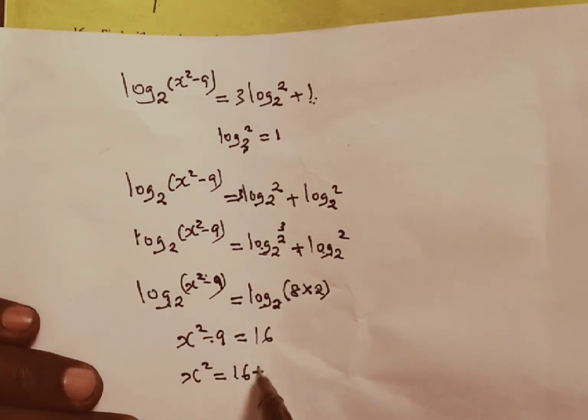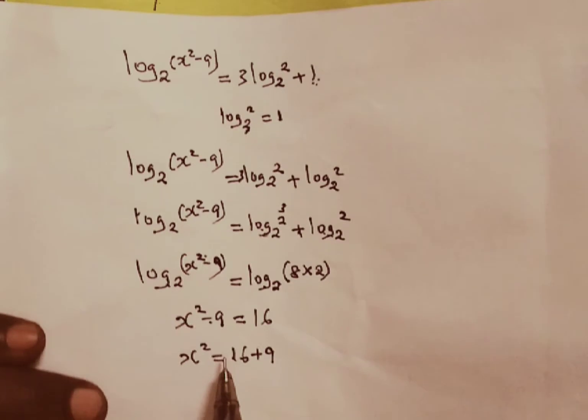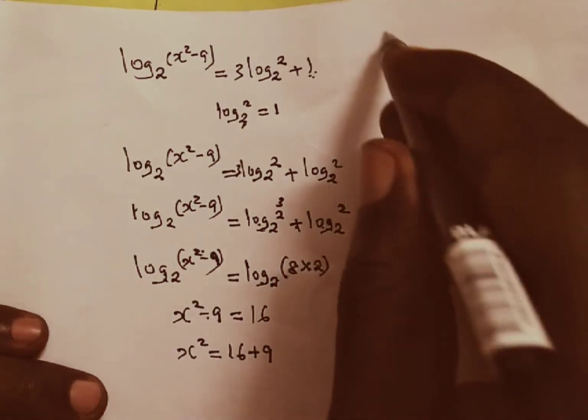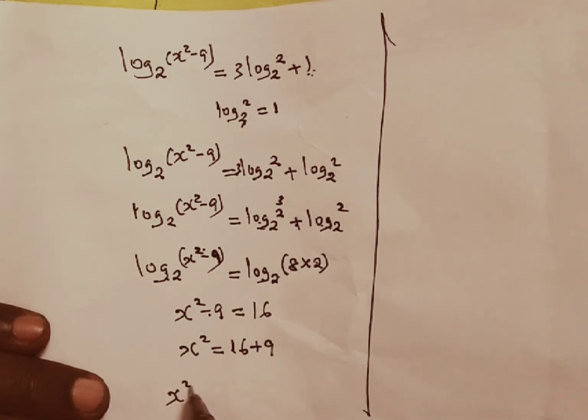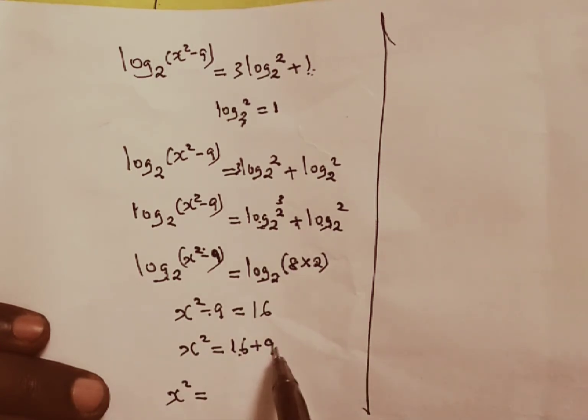Negative 9 will move to the other side, such that we remain with x squared, and our x squared is going to be 16. This is a negative, it is going to be a plus once it crosses the equal sign. From here, we are going to have x squared, which is equivalent to 16 plus 9, and 16 plus 9 is 25.